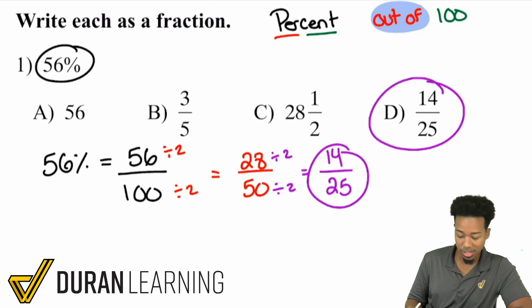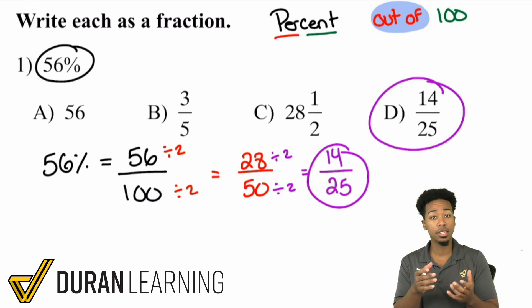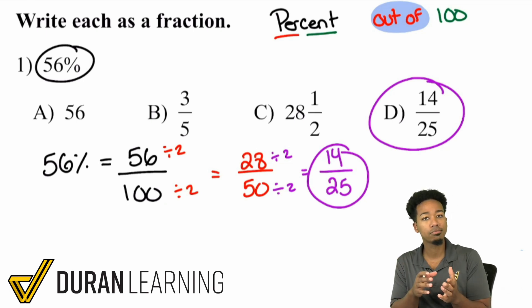So with that said, we got 14 over 25. And that's our answer right there in D. Now let's go ahead and go through a couple more exercises here. Because again, to turn a percent into a fraction, simply put it as a fraction over 100, divided by 100, and then simplify. That's it. Divide by 100 and simplify.